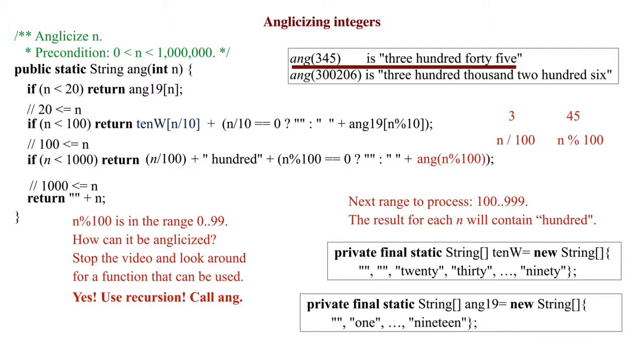Since n is less than 1000, n div 100 is less than 10, so it can be anglicized using array ang19.